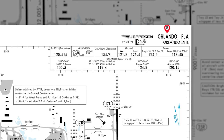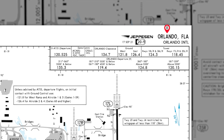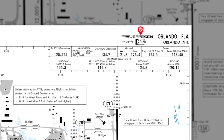Number eight is the geographic location of this airport — you guessed it, Orlando, Florida. And finally, number nine is the Jeppesen logo.